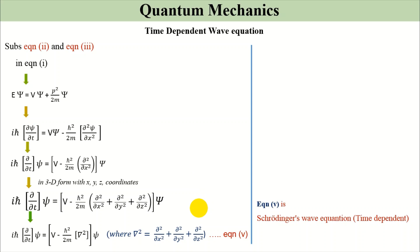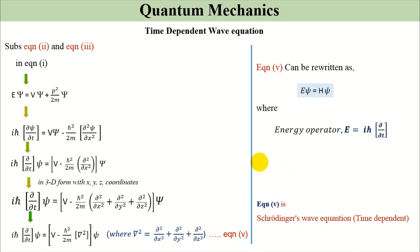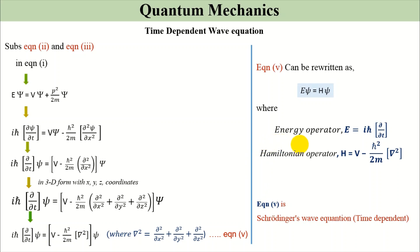To simplify further, this equation can be written as Eψ = Ĥψ, where the energy operator Ê = iℏ ∂/∂t, and Ĥ is the Hamiltonian operator given as V − ℏ²/2m · ∇². This completes the derivation of Schrödinger's time-dependent wave equation.